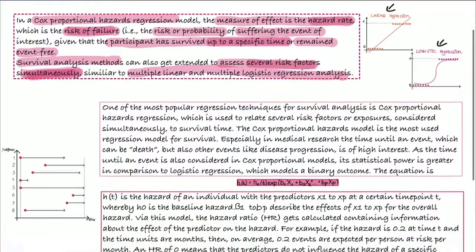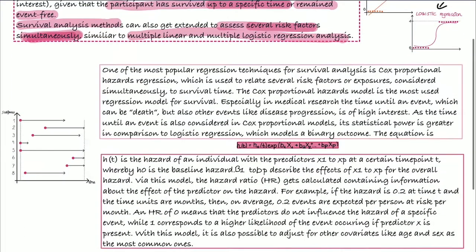Now the Cox proportional hazard regression model is one of the most popular ones for survival analysis, and as indicated before, we can assess several risk factors.